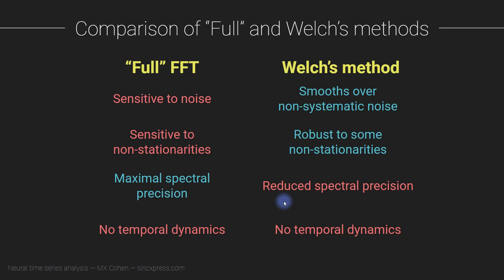Why does Welch's method have lower spectral precision? Because frequency resolution in the Fourier transform is determined by the number of time points. For a fixed sampling rate, the full FFT uses as many points as possible, whereas Welch's method takes only small snippets, reducing the number of time points even though the sampling rate is the same. So the spectral resolution is actually much lower.